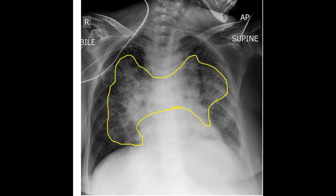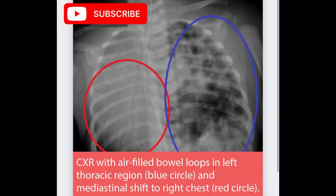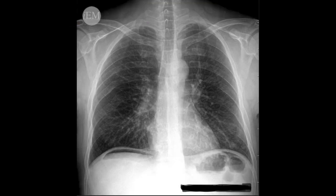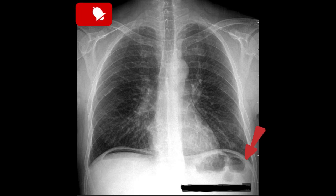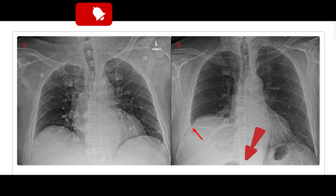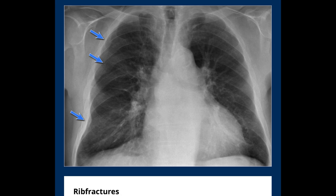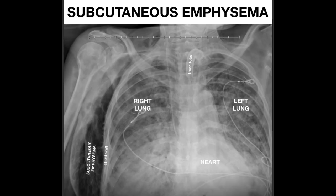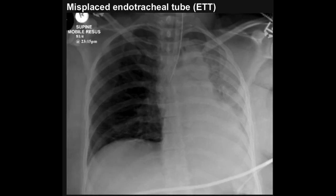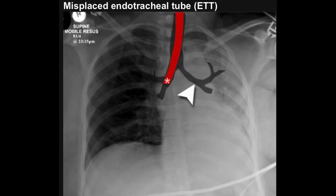For the diaphragm: if bowel loops are seen in the chest X-ray, there must be a hernia. Free air under the diaphragm indicates a perforated hollow viscus. A raised hemidiaphragm should raise suspicion for collapse, phrenic nerve palsy, or a subphrenic abscess. Finally, for everything else: check for any bone fractures, subcutaneous emphysema, and device malposition. In a patient with an endotracheal tube, if it is too deep into the right main bronchus, there may be a risk of left lung collapse.